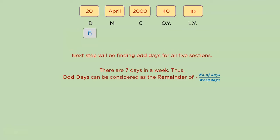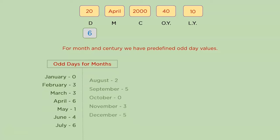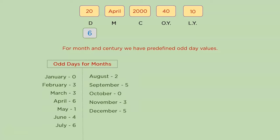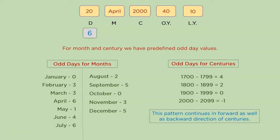These predefined odd day values for centuries cycle in both forward and backward directions. For example, century 2100–2199 has odd day value 4, and 2200–2299 has value 2. For the ordinary year: 1 odd day per ordinary year gives 40 odd days; for leap years: 2 odd days gives 10 extra. Since 40 and 10 exceed 7, we take remainders: 40 ÷ 7 = remainder 5, and 10 ÷ 7 = remainder 3.